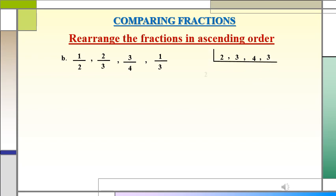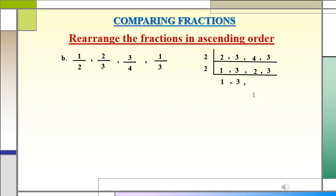We will first divide by 2. 2 times 1 is 2, so write down 1. 3 cannot be divided, so just bring down 3. 2 times 2 is 4, write down 2. 3 cannot be divided, so just bring down 3. Again, we can divide by 2. Bring down 1, 3 cannot be divided, bring down 3. 2 times 1 is 2, so now we write 1 and finally bring down 3.